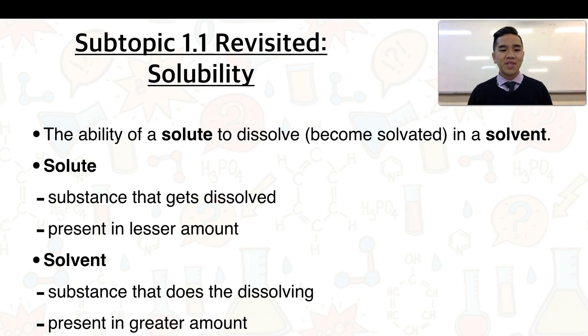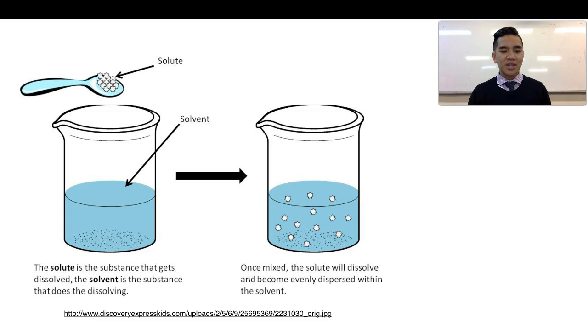The solvent is the substance that does the dissolving and it's present in the greater amount. As an example here we've got a solute which is a solid substance. We're adding it to a liquid solvent and the solid solute is essentially dissolving and becomes evenly dispersed within the solvent to form our solution.